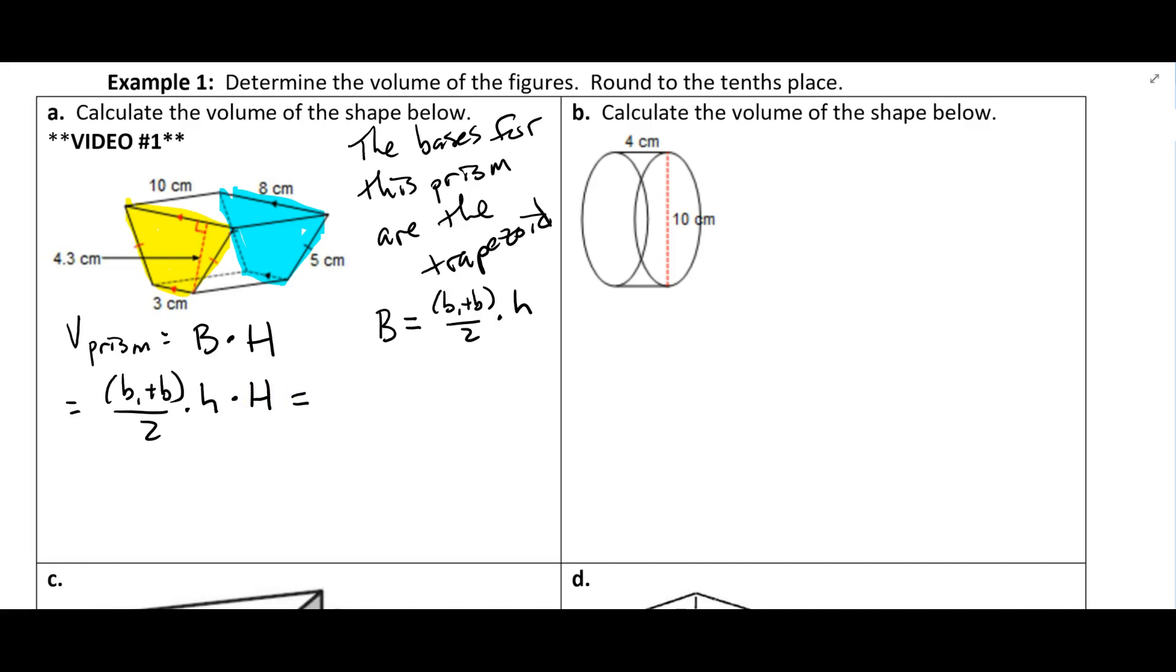So in the trapezoid, the two bases are 3 centimeters and 8 centimeters. That's B1 and B2. So I've got 3 plus 8 divided by 2. And then the height of that trapezoid is 4.3, so times 4.3.